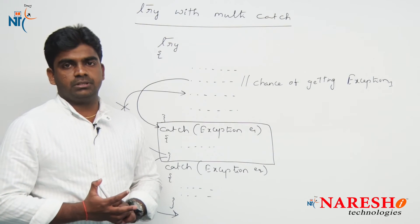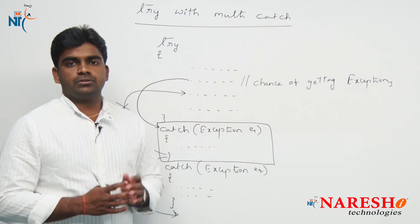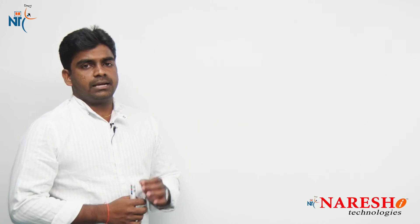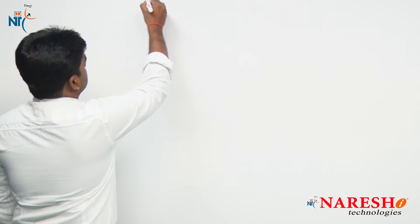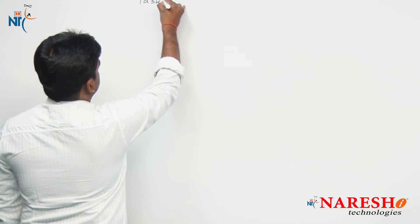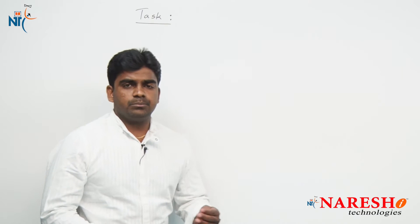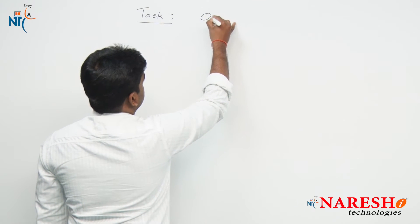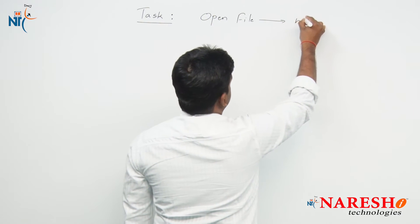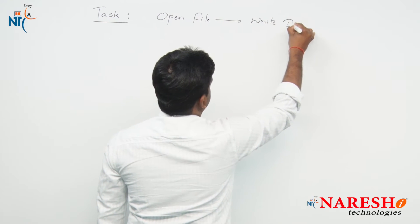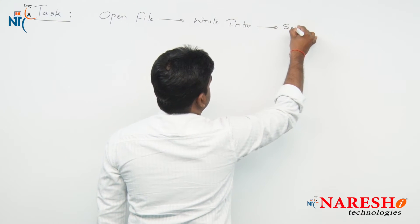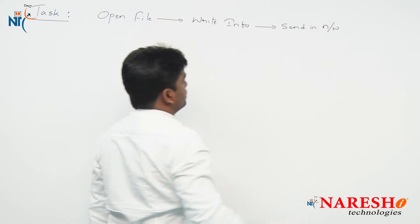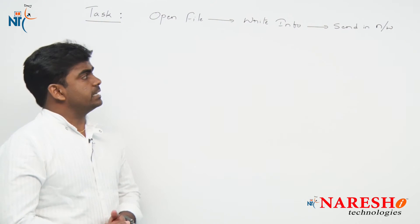Why does control not return to the try block? Let's discuss an example so you can understand exactly where we use try with multiple catch blocks. Consider a task that has many steps — like an ATM transaction. For example, the task is: Step 1 — open a file; Step 2 — write some information inside that file; Step 3 — send it over the network. One task contains three steps.